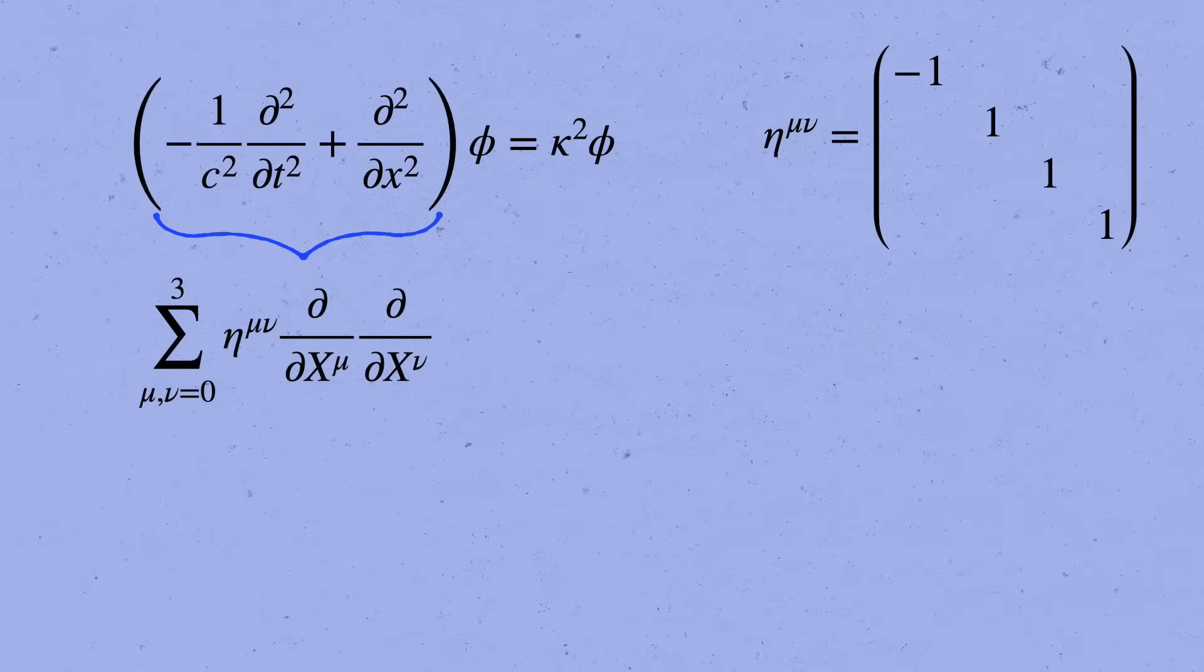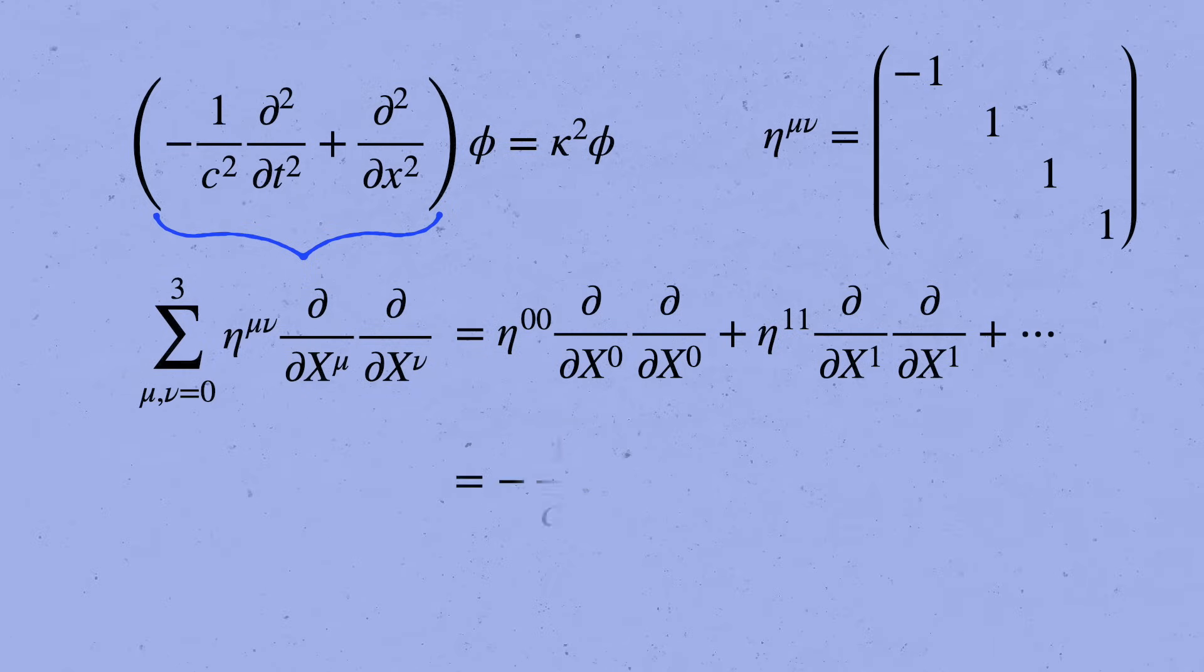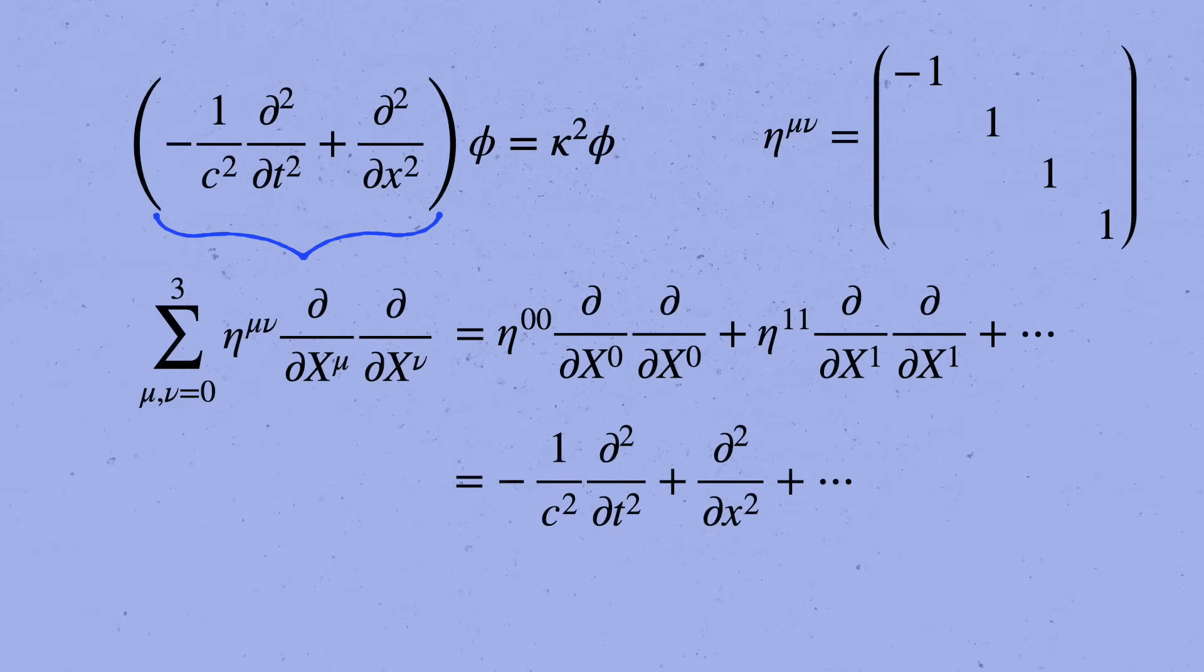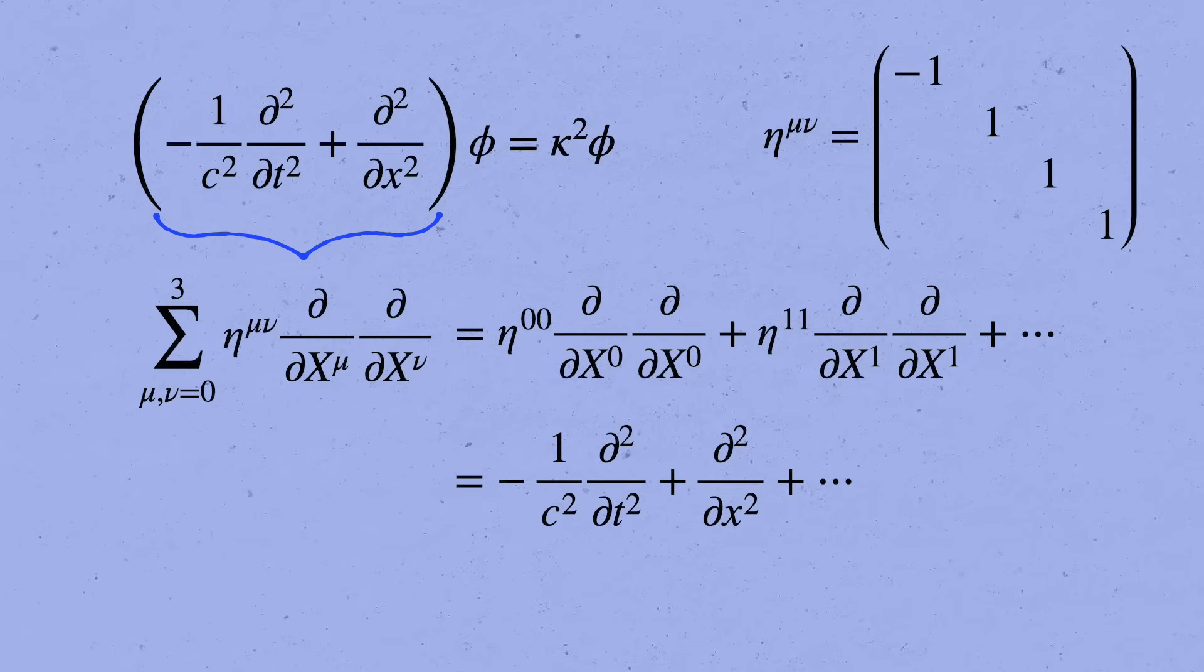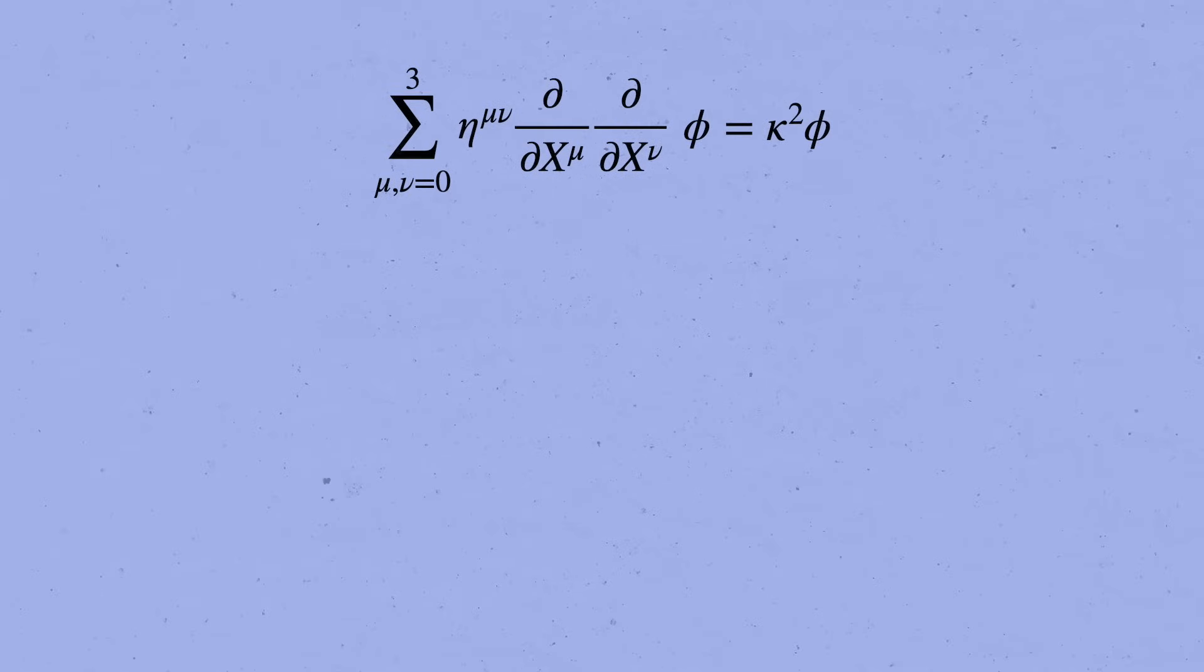Remember that eta is a diagonal matrix, so most of the terms here are actually zero. All we get are the diagonal terms. Eta zero zero times d by dx0 d by dx0 plus eta one one d by dx1 d by dx1 plus the y and z terms. Eta zero zero is minus one, and x0 is ct. So we get minus one over c squared, times d squared by dt2 in the first term, and likewise d squared by dx2 in the second term, and so on. But these are exactly the derivatives that show up on the left hand side of the Klein-Gordon equation. So we can write it like this. The basic reason this equation is compatible with relativity is because the mu and nu indices in the derivatives are paired up with the indices in the metric, eta mu nu, and because phi itself is a scalar.